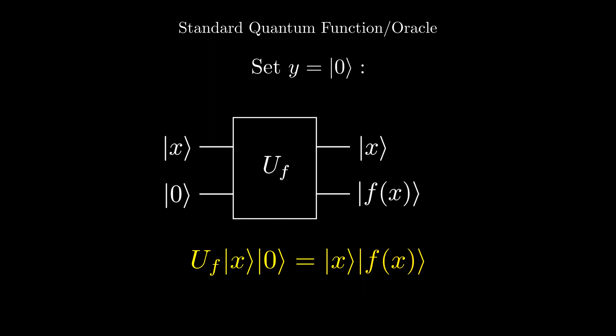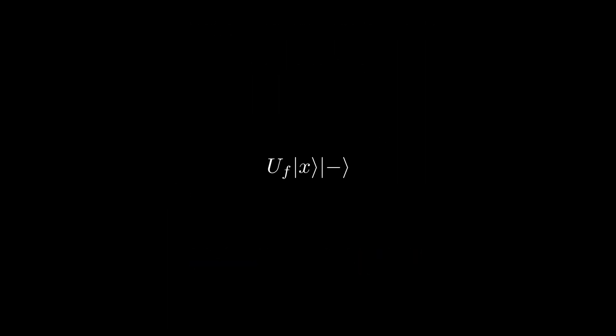Let's see what happens if we apply a function f to this state with the output register being the minus state. First let's rewrite the minus state like this and distribute the x state into the superposition.